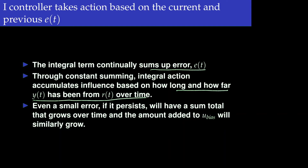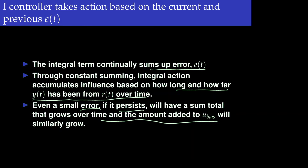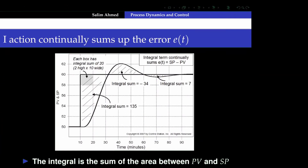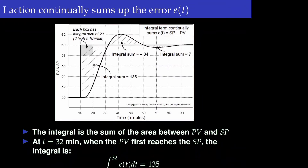Even if there is a small error, if it persists, you have a sum total that grows over time and is added to the u_bias term. The integral action is nothing but the area under the error curve — when you have the set point and the output value, the integral action is represented by the area between them.